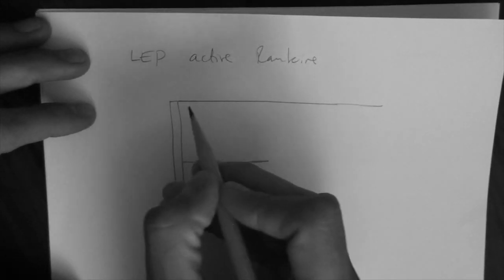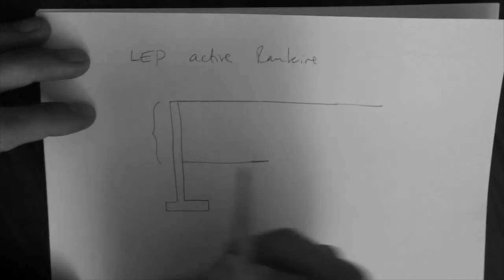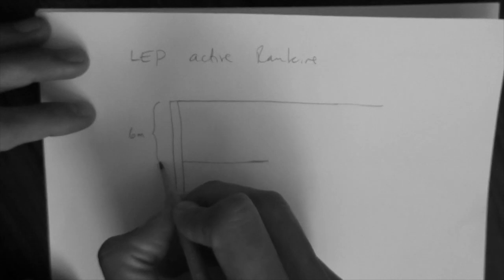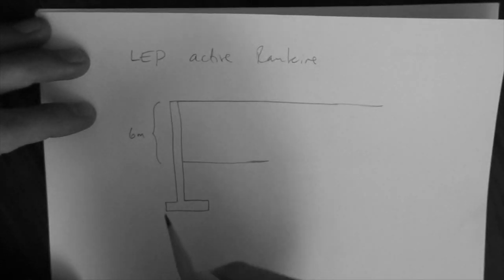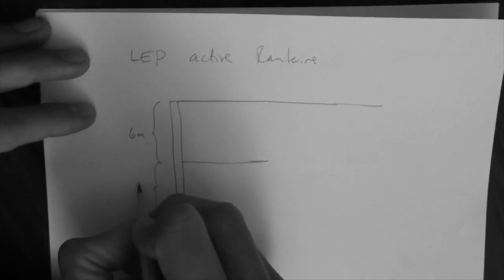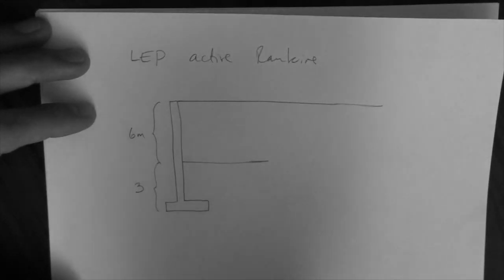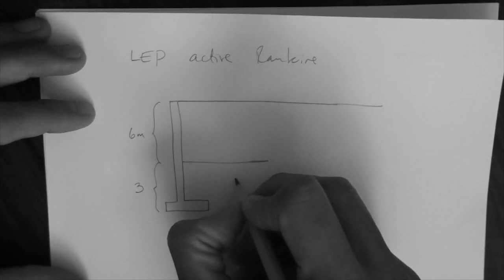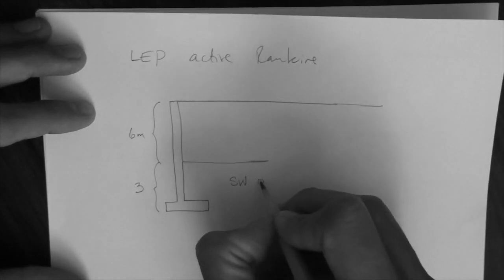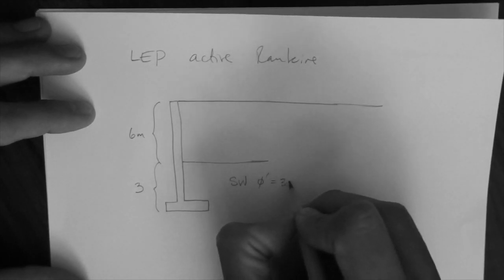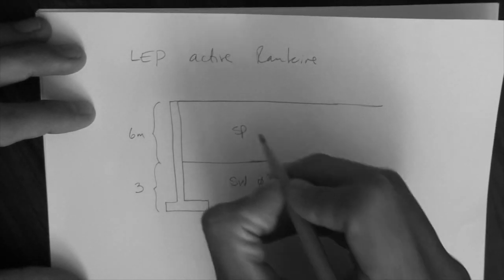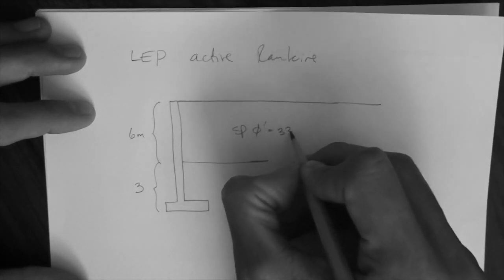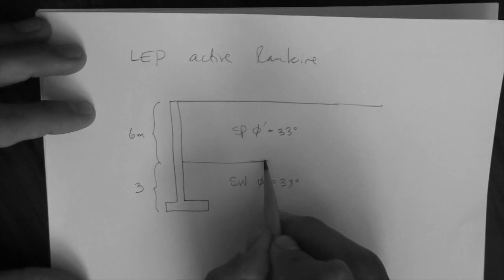Let's put dimensions here. So let's say that this here is 6 meters, and from here down, this is 3 meters. It's not to scale, but that's okay. Let's call this a well-graded sand with a phi of 38 degrees. This is a poorly graded sand with a phi of 33 degrees. And the interface is here.